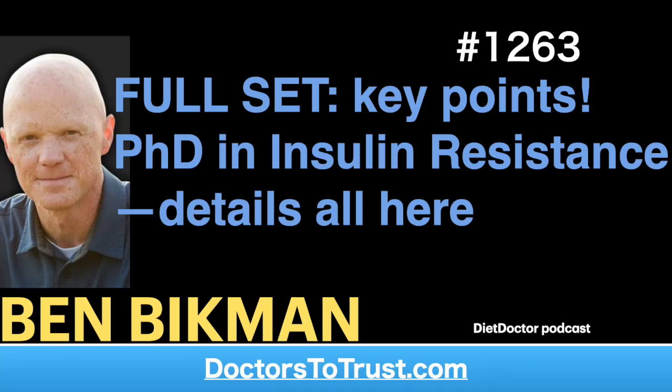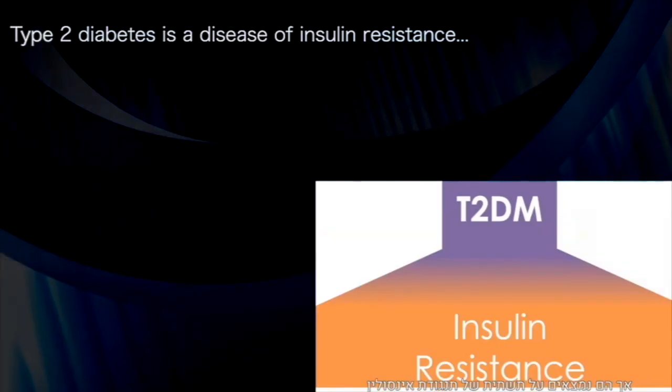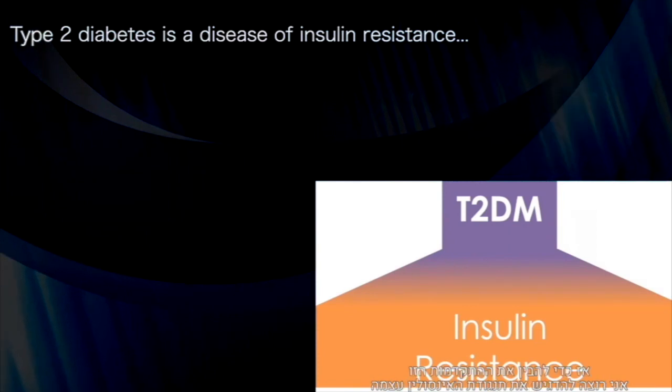Type 2 diabetes is a disease of insulin resistance. Not to say that there aren't other variables that are contributing here, but it is built on a foundation of insulin resistance.